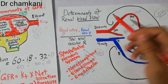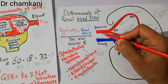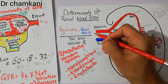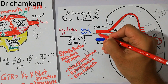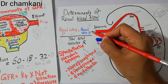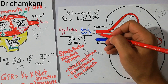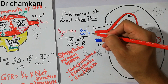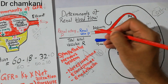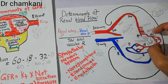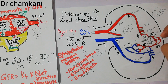Endothelin is released from the endothelium of blood vessels. The endothelial cells lining the blood vessel wall secrete endothelin, which acts as a vasoconstrictor. Endothelin also constricts the afferent and efferent arterioles.